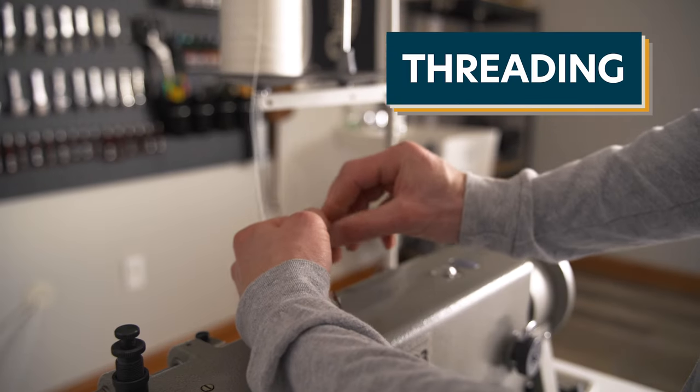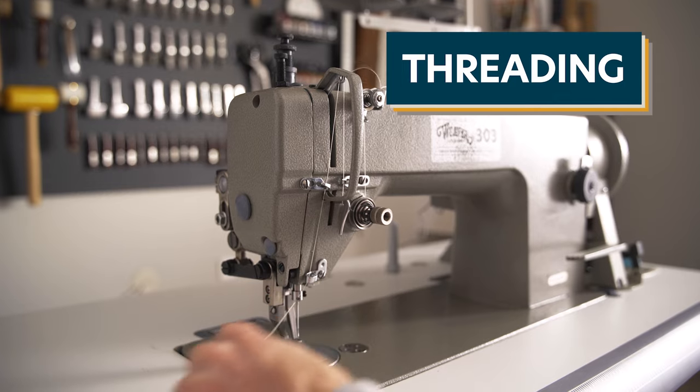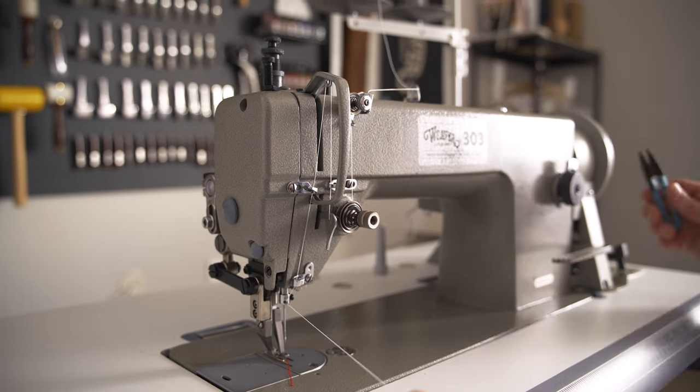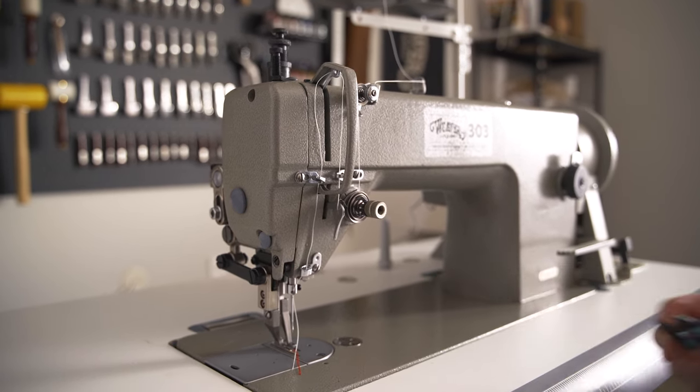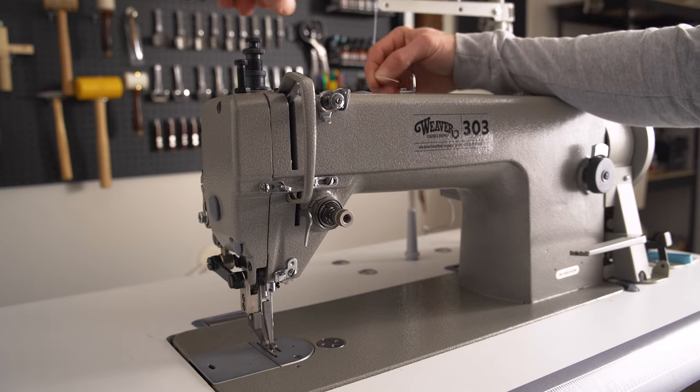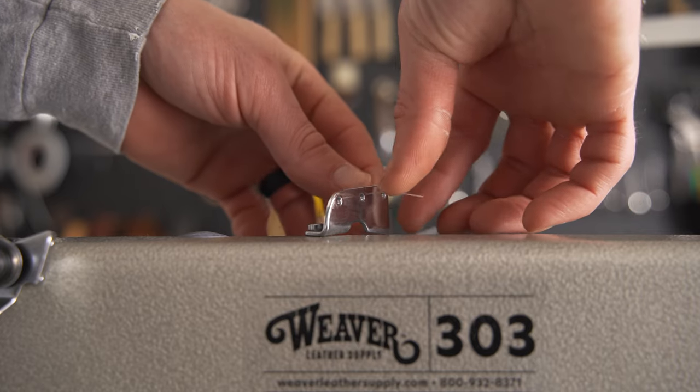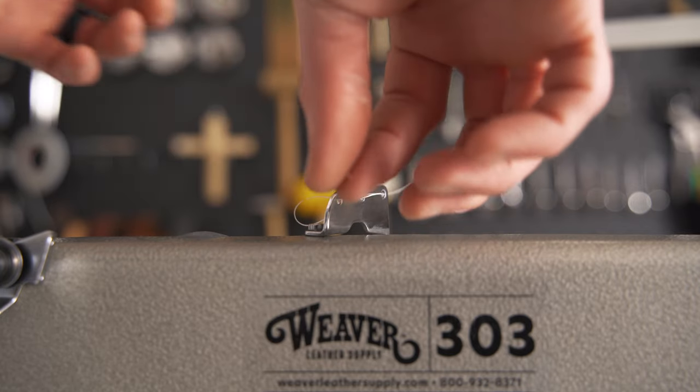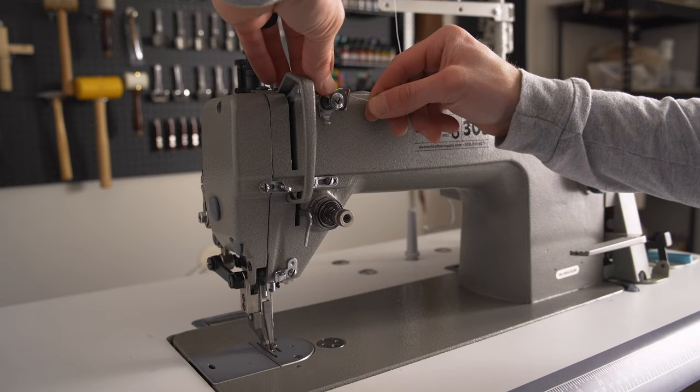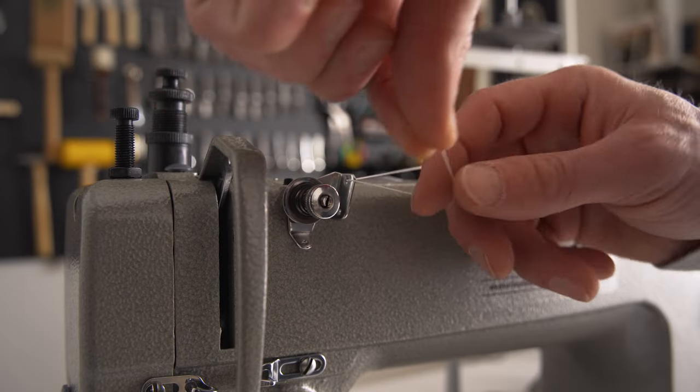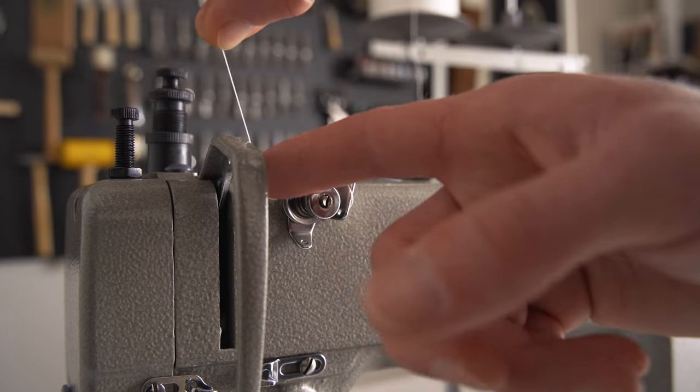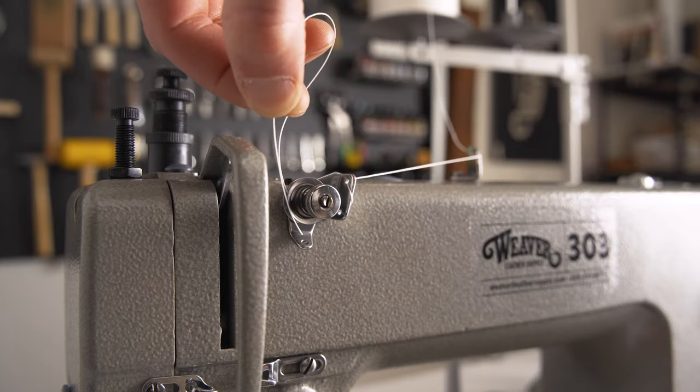The machine comes already threaded. Simply tie your thread from the thread stand to the thread in the machine and pull it through until it reaches the needle bar. To thread your machine without any thread in it, start by pulling it from the thread stand then double loop it through the top guide. Then pull it through the top hole of the first tension disk plate. Loop it back around through the bottom hole. Pull the thread between the tension disk counter clockwise and through the eye at the base of the plate.